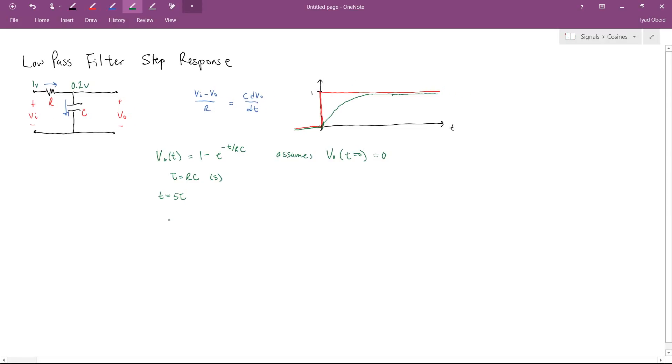And the way you can tell is you should substitute 5RC into the equation above. So V_out at t equals 5 time constants is going to equal 1 minus e to the minus 5RC over RC. So 1 minus e to the minus 5,